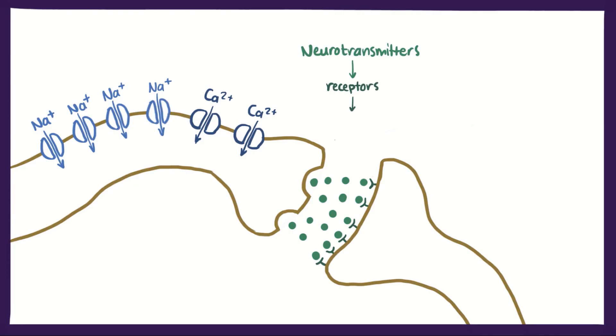Neurotransmitters bind to the receptors and basically tell the cell to either open up the ion channels and relay the electrical message, called excitatory neurotransmitters, or close the ion channels and stop the electrical message, called inhibitory neurotransmitters.